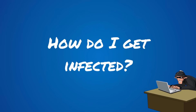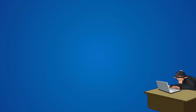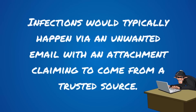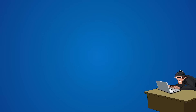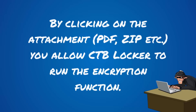How do I get infected? Infections would typically happen via an unwanted email with an attachment claiming to come from a trusted source. By clicking on the attachment — PDF, zip, etc. — you allow CTB Locker to run the encryption function.